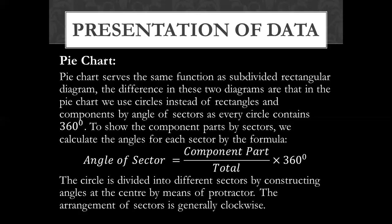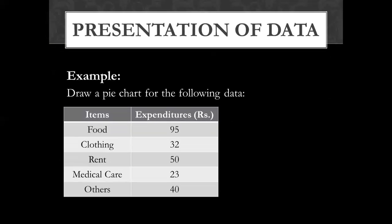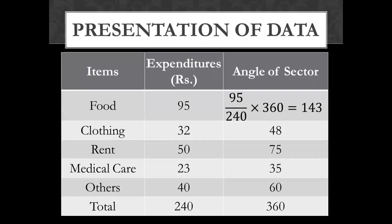In the circle, we will rotate our protractor to the center. Using the existing data, we convert values to sector angles to measure how much of the expenditures are given. The values are 95, 32, 50, 23, and 40 — all divided by the total of 240.